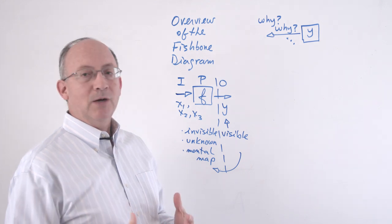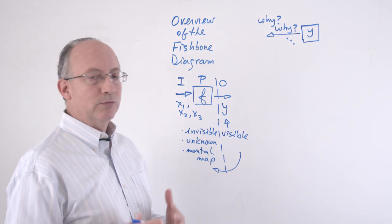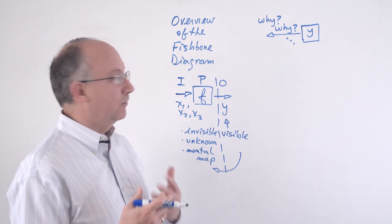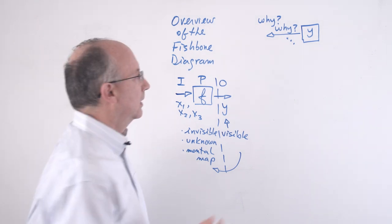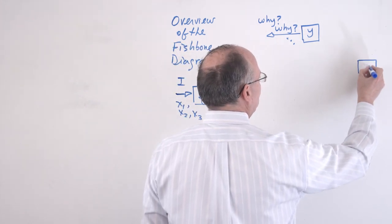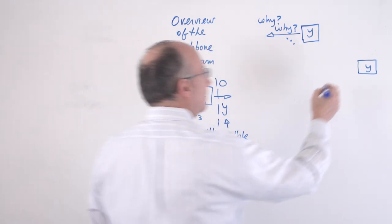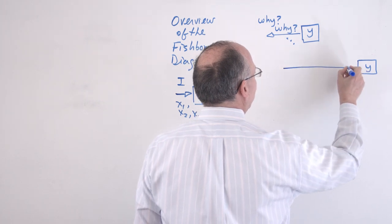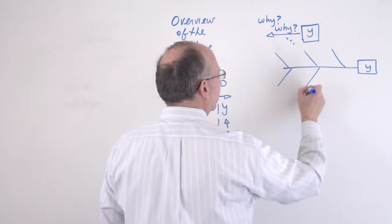Now, at the same time, Ishikawa, the inventor of this method, tells us that there are certain broad categories that we could use which will help us classify all the brainstorming, all the thoughts that we may have. And so he suggests the following: that if you have here a problem, a why, or an effect that you want to analyze, it may be a good idea to look at this as a collection of six possible categories of things or categories of causes.